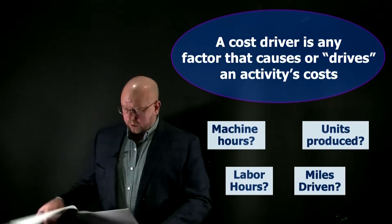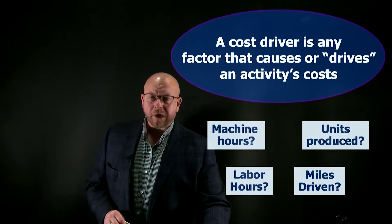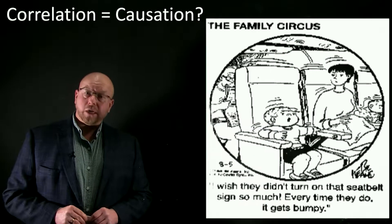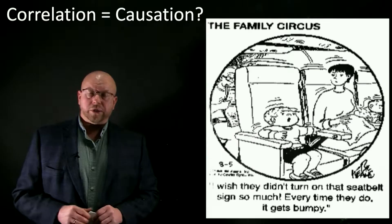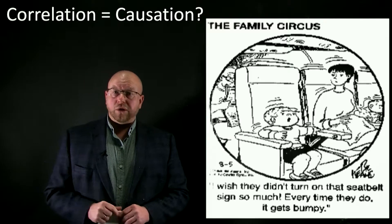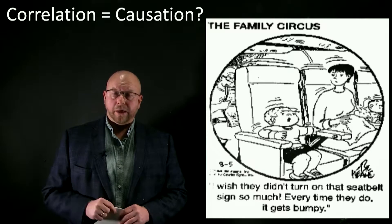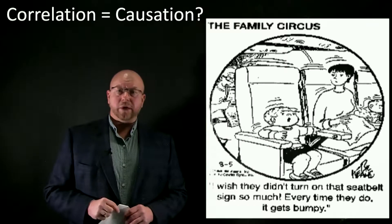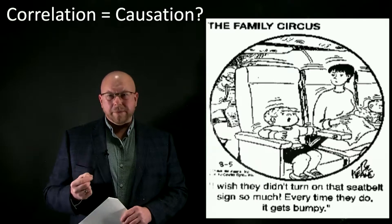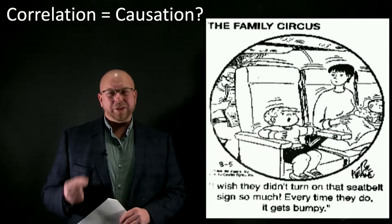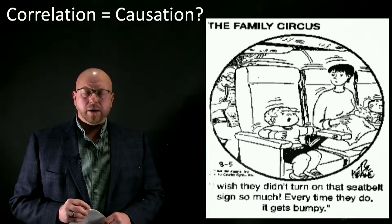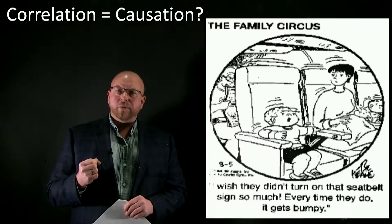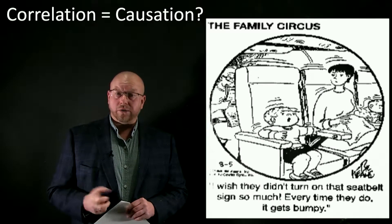The cost of fuel in your car is highly correlated with miles driven, and there is a causal relationship — more miles equals more gasoline. Sometimes there might be a correlation but not a true cause driving that cost, and that would be an example of a poor cost driver. Take this cartoon for example — a child on an airplane says 'I wish they didn't turn on that seatbelt sign so much; every time they do, it gets bumpy.' Yes, there's a correlation, but the bumps cause the sign to be on, not vice versa.